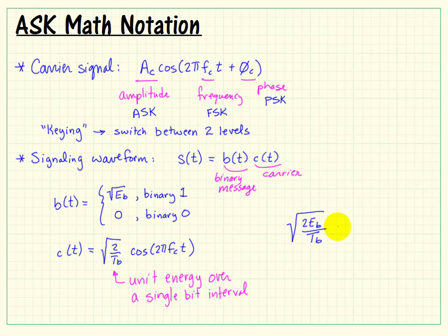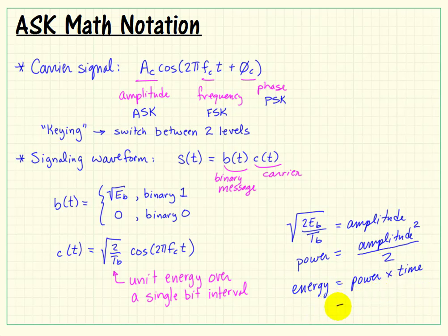Now, it might be helpful to take a look at all of that for a moment. If we put those two together, we see that the amplitude is the expression shown. Power in general would be the amplitude squared over 2. Energy would be the power times time, time of one bit interval.